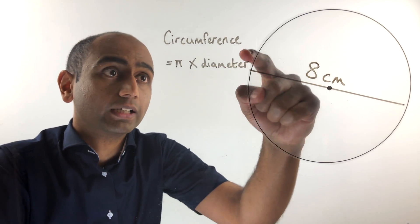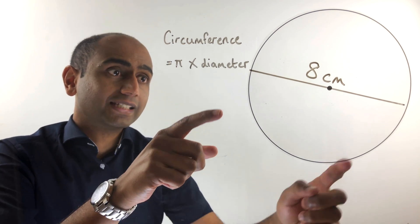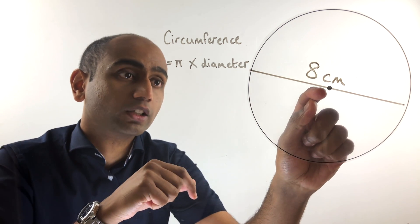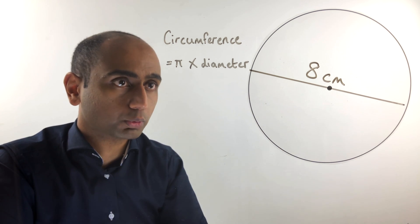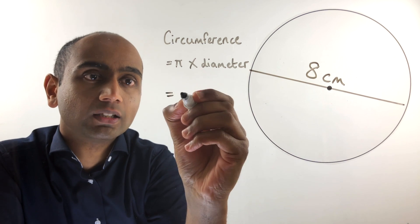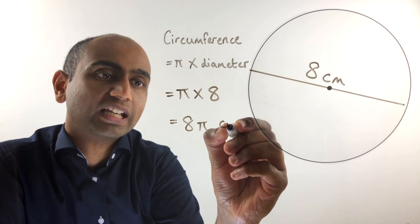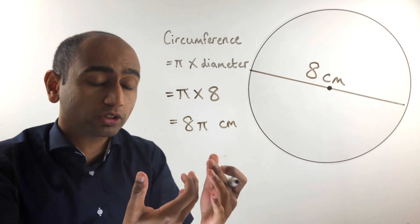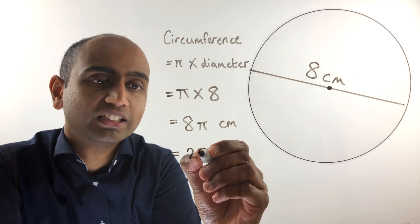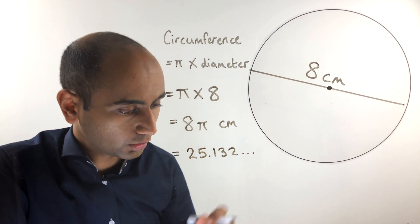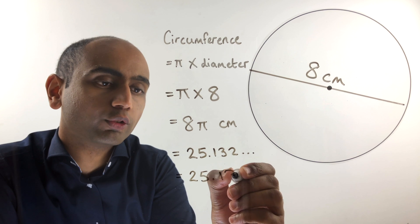In the second example we need to work out the circumference of a circle with a diameter of eight centimeters. Remember the diameter is the distance between two points on the circumference joined by a line through the center, so we don't have to worry about doubling a radius like in the previous example. The circumference is pi times eight, which we write more simply as 8π centimeters for an exact answer. Putting that into a calculator gives an answer beginning 25.132..., which rounds to 25.13 centimeters to two decimal places.